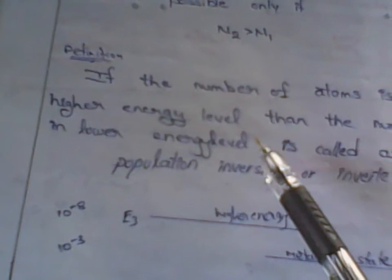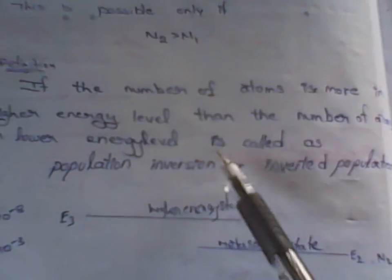If the number of atoms is more in the higher energy level than the number of atoms in the lower energy level, then that condition is nothing but population inversion or inverted population.